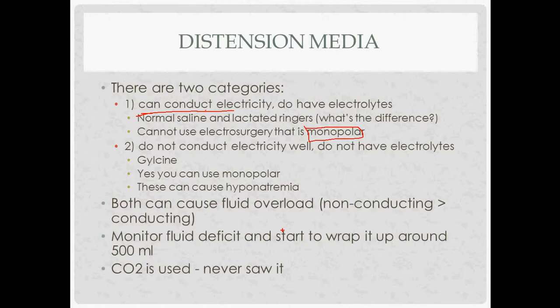The other general category of distension media are those that do not conduct electricity and do not have a lot of electrolytes — electrolyte-poor solutions. An example is glycine. When using these, you can use monopolar electrosurgery. However, non-conducting electrolyte-poor solutions are more likely to cause hyponatremia and are also more likely to cause fluid overload, although both types of distension media can cause fluid overload.